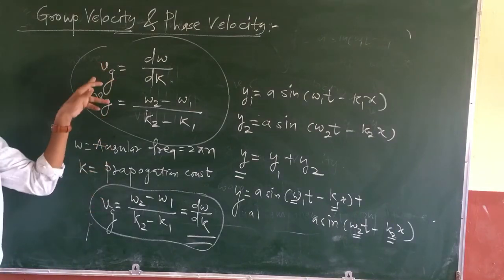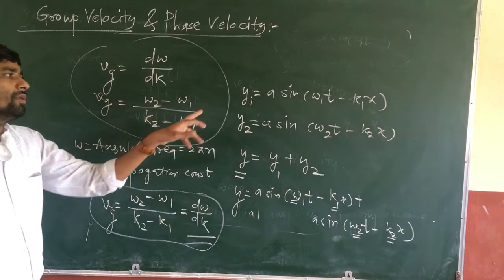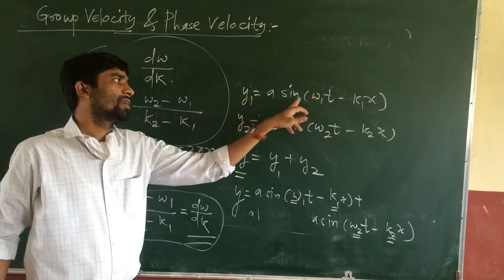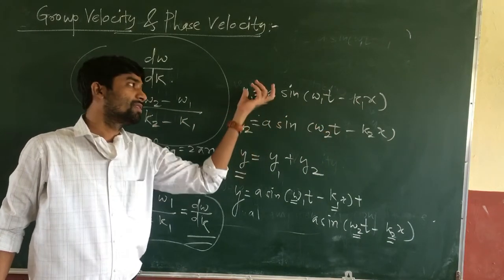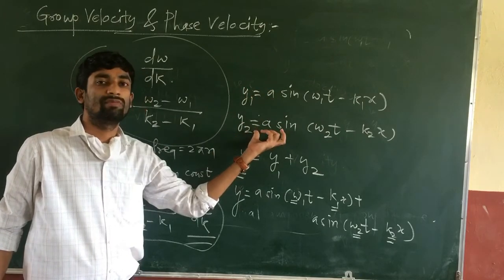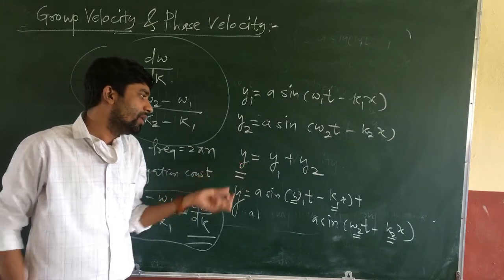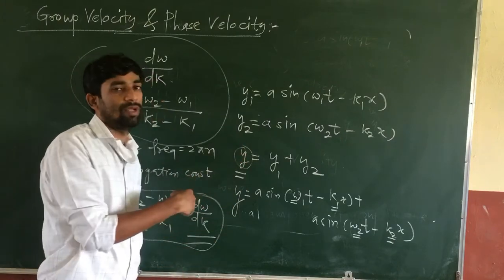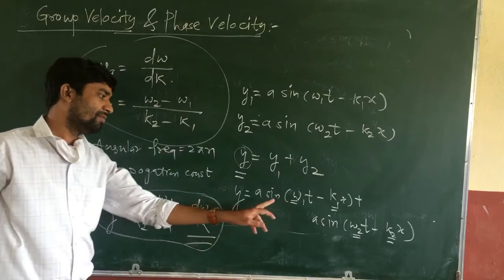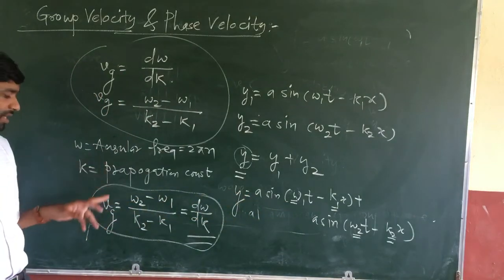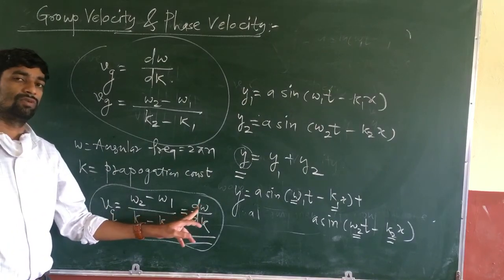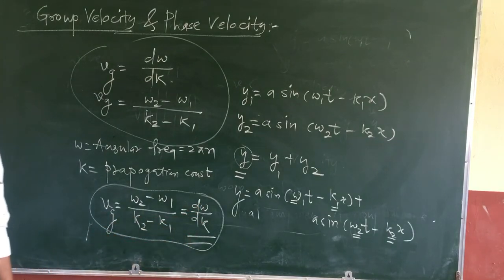So how do we obtain the relation dω/dk? We consider two waves: the first is y1 = a sin(ω₁t − k₁x) and the second is y2. When these two waves interfere and form a wave packet, we get the resultant displacement equation, and from that equation we obtain the expression for group velocity: vg = dω/dk.